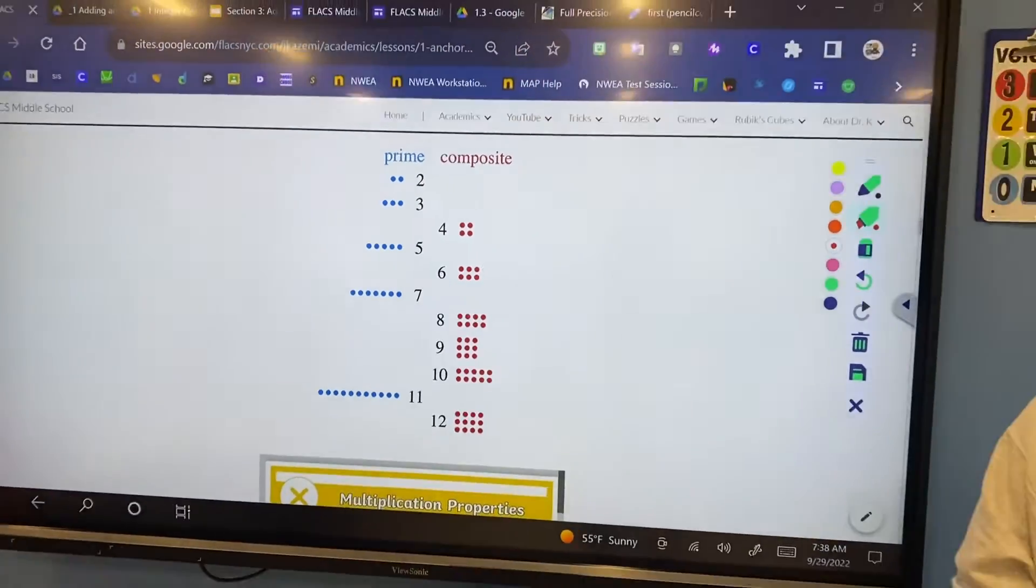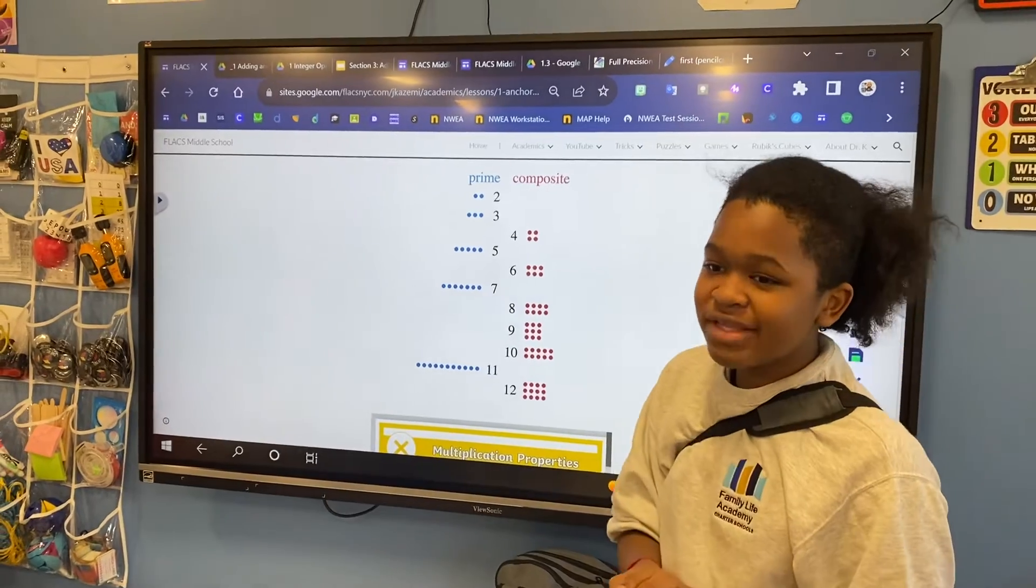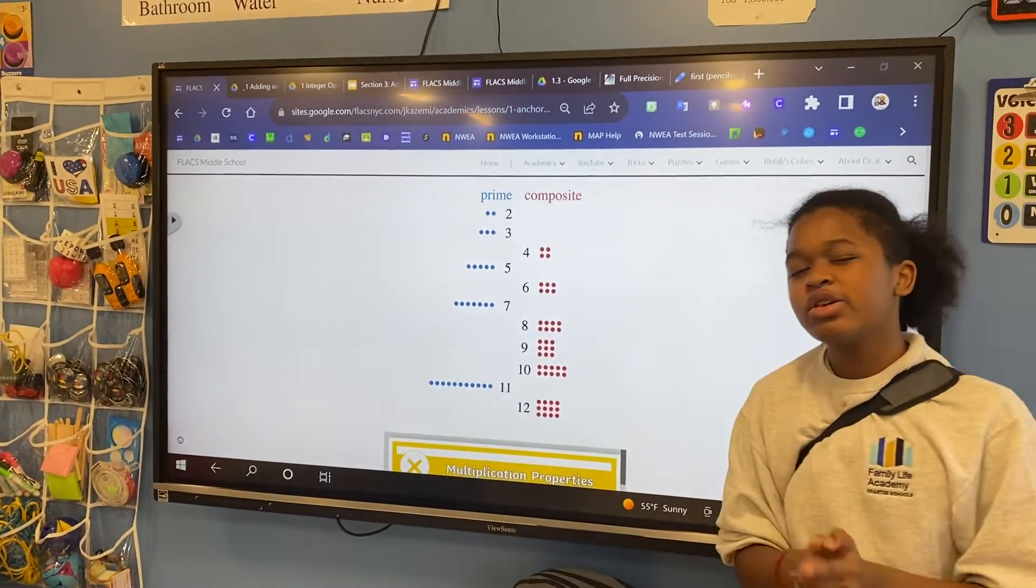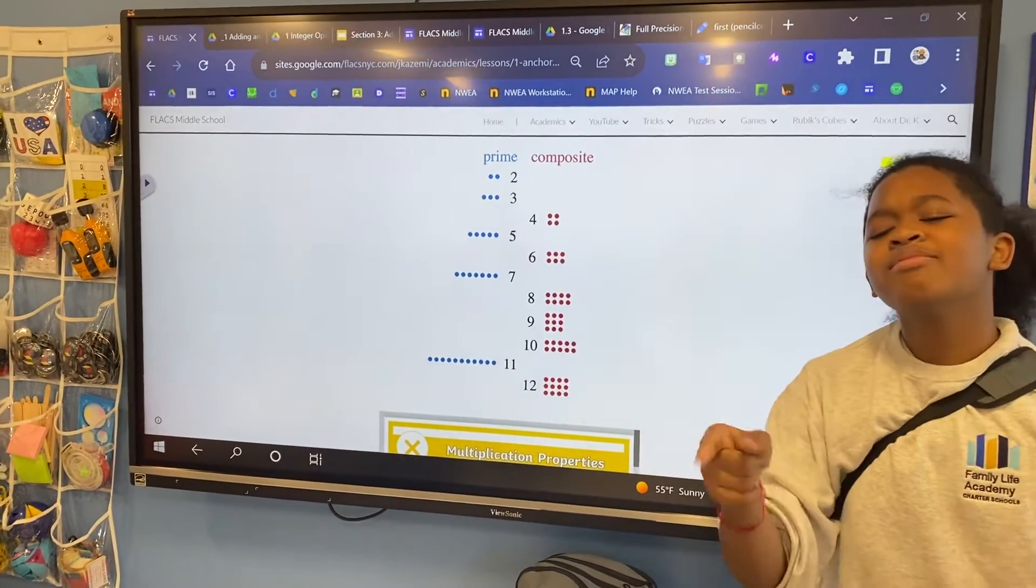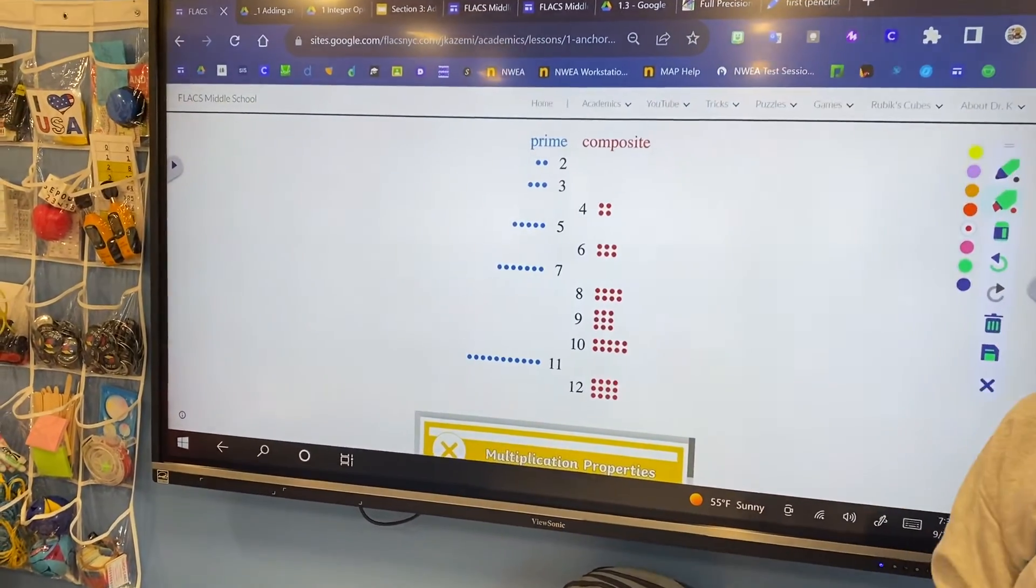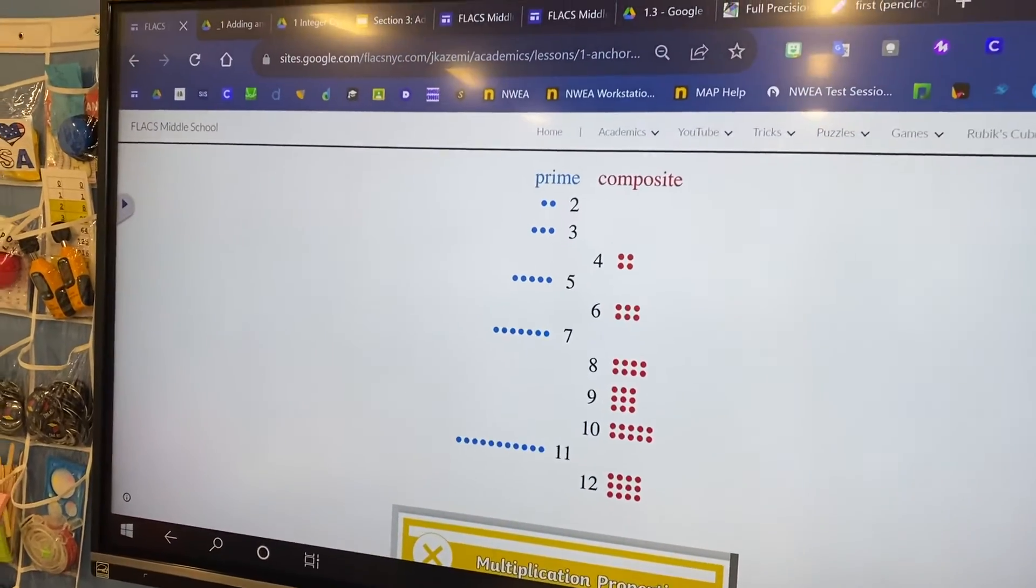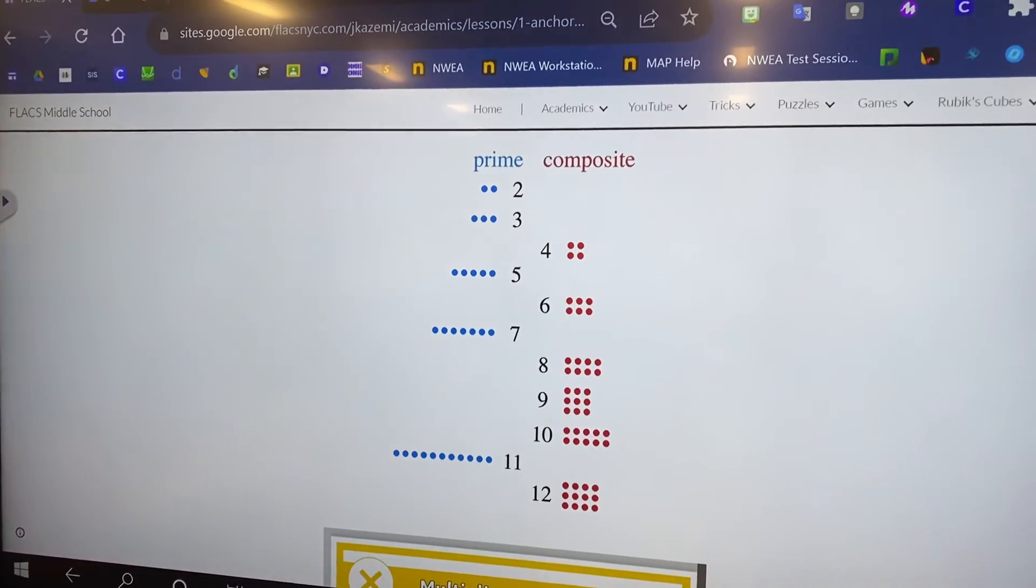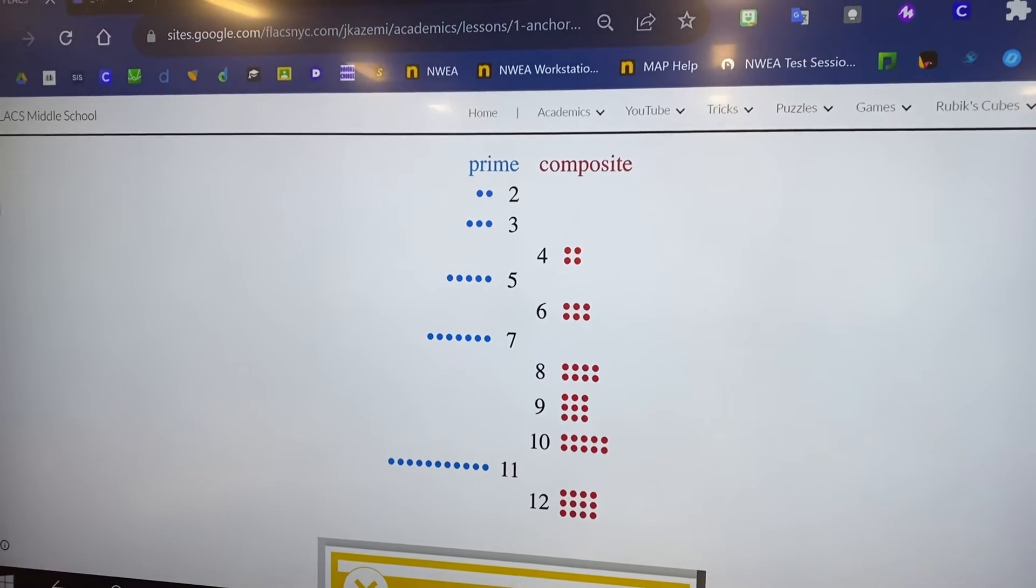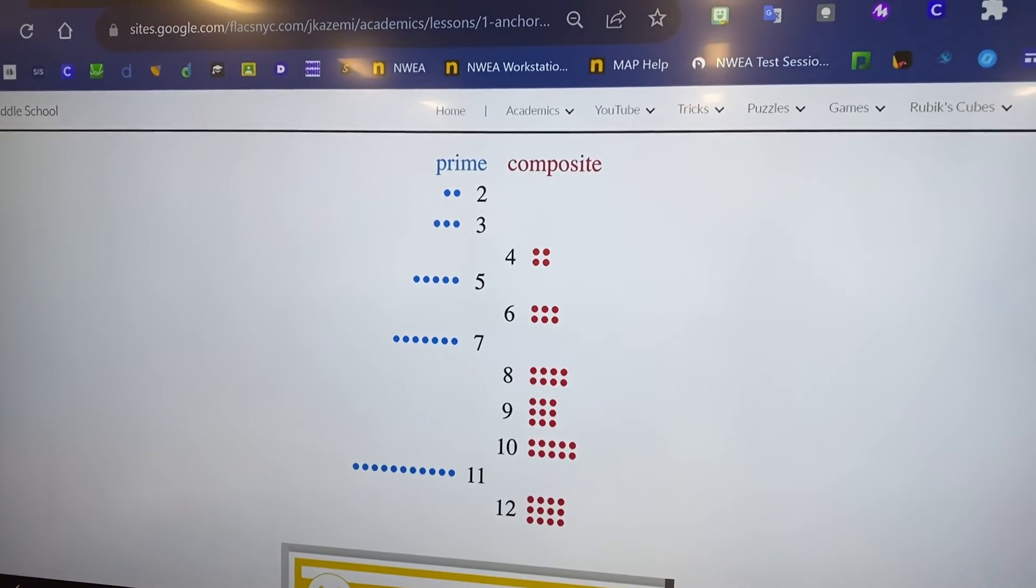So I must be leaving now, but do numbers 13, 14, and 15 in your notebook. So 13, 14, 15. You're gonna have to decide prime or composite, a straight line or a rectangle or a square.